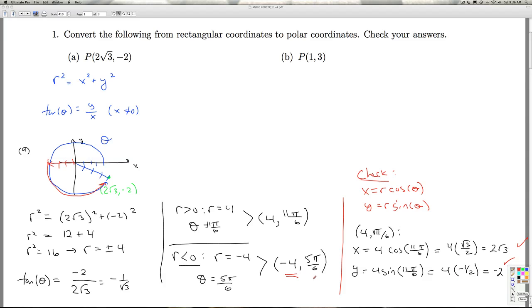And I'll leave it to you, if you choose negative 4, 5 pi over 6, we get the correct x and y as well. So that'll do it for part A.